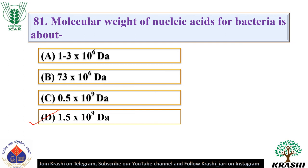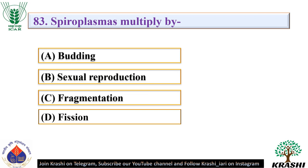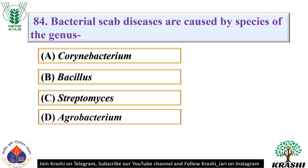Question number 82: Size of spiroplasma cells are in the range of. The correct answer is option A — 100 to 250 micrometers. Question number 83: Spiroplasmas multiply by — they multiply by fission. Question number 84: Bacterial scab diseases are caused by species of the genus. The correct answer is option C — Streptomyces.